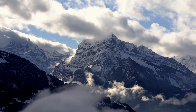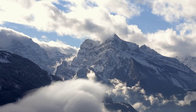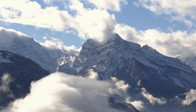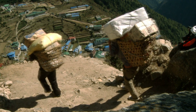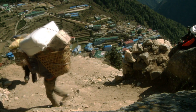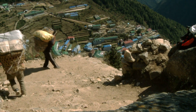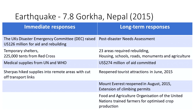Some of the secondary effects saw avalanches on Everest, which took the lives of some climbers in the area. Tourism also took a real big dip — tourism is really important for places like Nepal, making up a large percentage of their GDP, so lots of people's jobs were affected. Restaurants, hotels, and sherpas in the area weren't able to earn money.